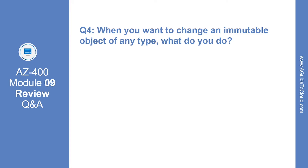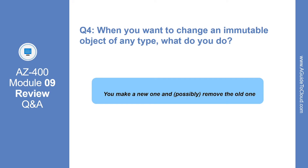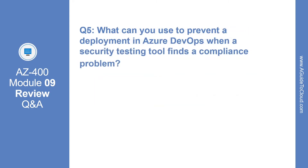Question number four: when you want to change an immutable object of any type, what do you do? The correct answer is you make a new one and possibly remove the old one. Question number five: what can you use to prevent a deployment in Azure DevOps when a security testing tool finds a compliance problem?